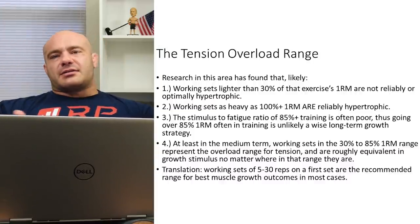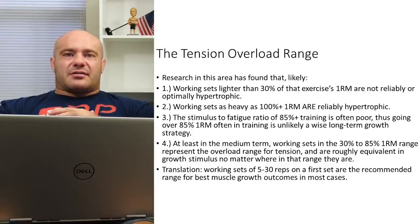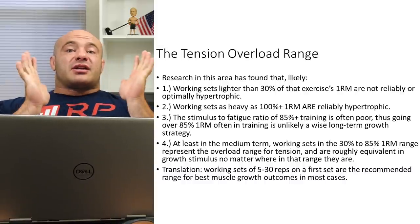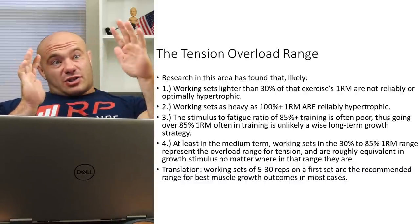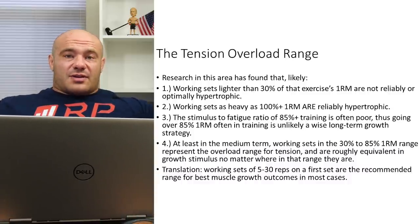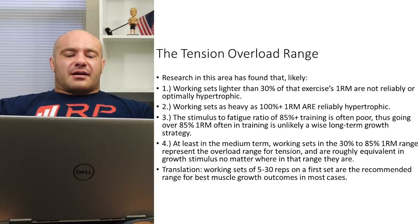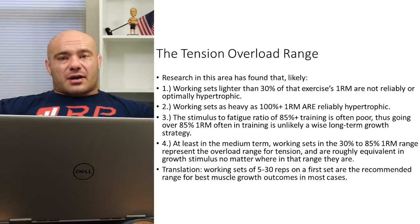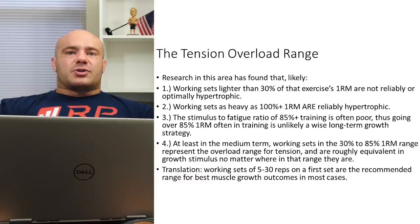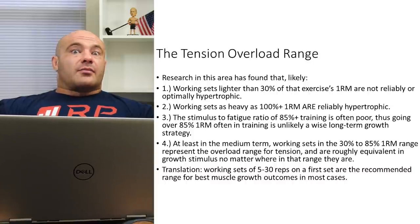On the other hand, they've tested loads all the way up to 100-plus percent of 1RM — overload eccentrics like lowering a Smith machine bench press at 110% of your one rep max, then having the research team slide some weights off so you can press back up. Working sets as heavy as 100% plus 1RM have been shown to be reliably hypertrophic. So we get reliable hypertrophy anywhere between 30% and 100% of 1RM.